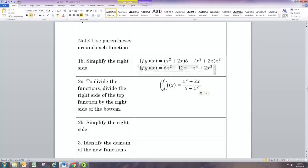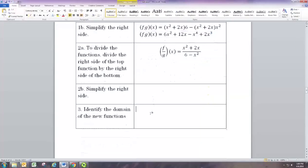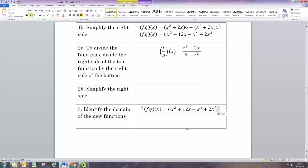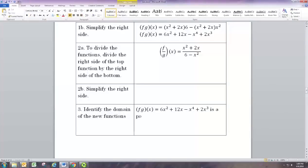Now let's look at the domains of these things. The product f times g is a polynomial so the domain is all real numbers.